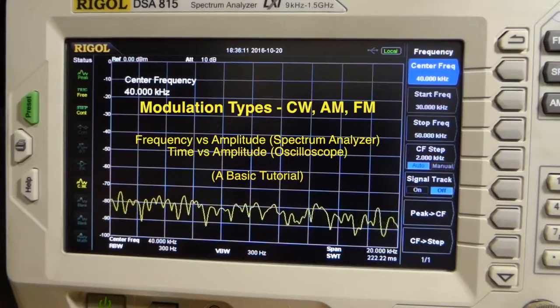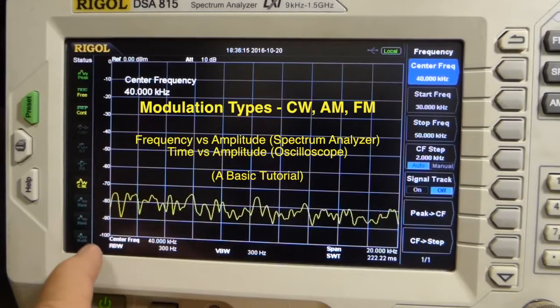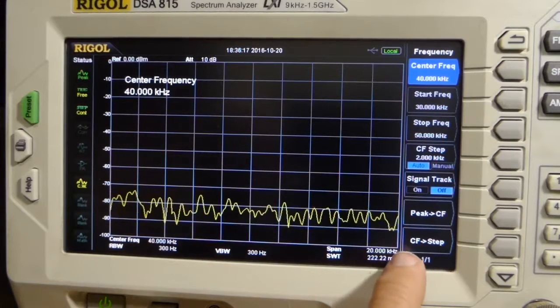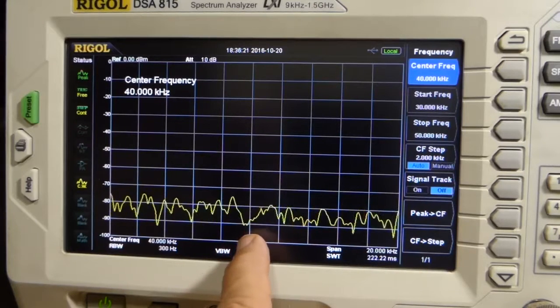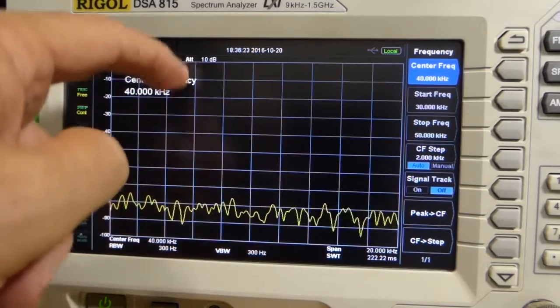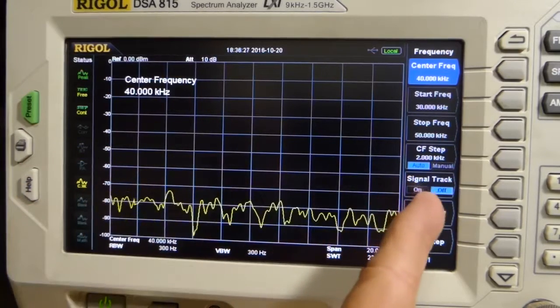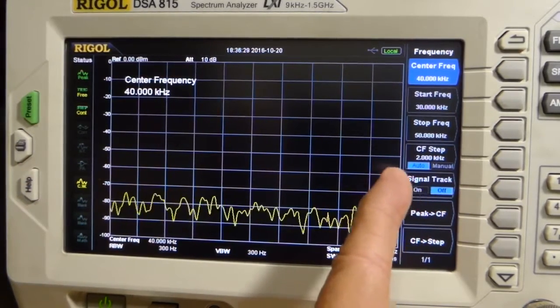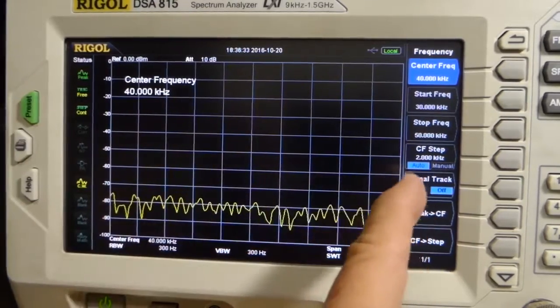We look at the frequency span around 40 kHz, which is where I'm going to put a carrier. From 30 to 50 kHz here, 40 will end up here. This is the amplitude and this is the frequency, as opposed to an oscilloscope, which will give you amplitude and time.